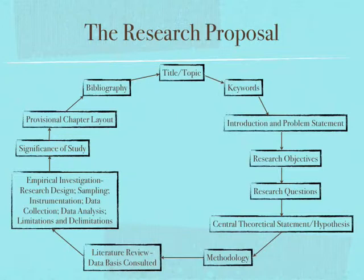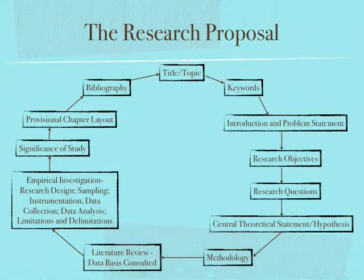I just drew a diagram so you can see what the research proposal consists of. First you start with your title and topic. Then you have your keywords, which follow right under your title. Then comes your introduction and problem statement. Next week we'll do research objectives, research questions, and your central theoretical statement. Kristal and Dr. Dorate will do the methodology — covering the literature review, empirical investigation, and methods used. Then we'll do the significance of the study, provisional chapter layout, and bibliography.